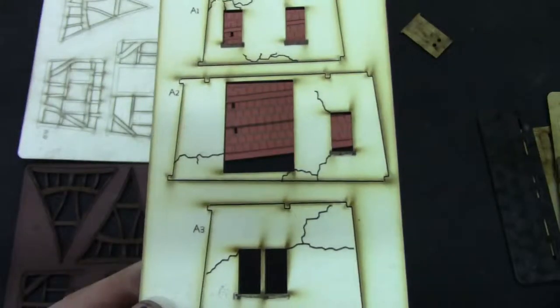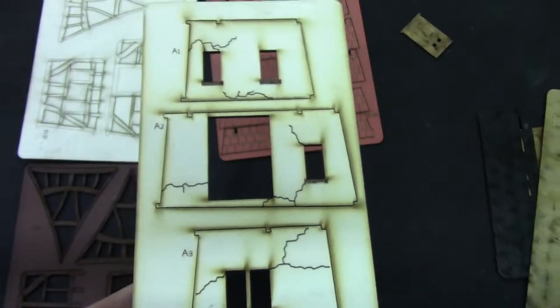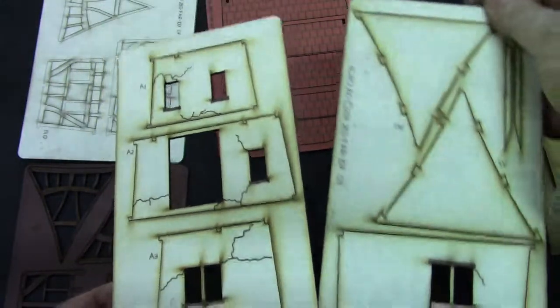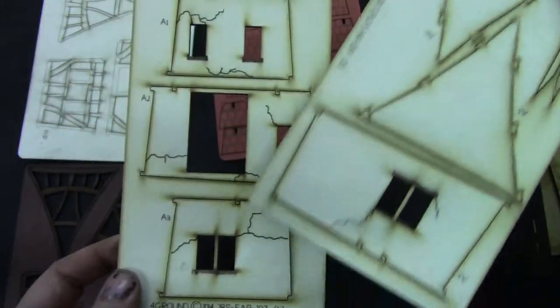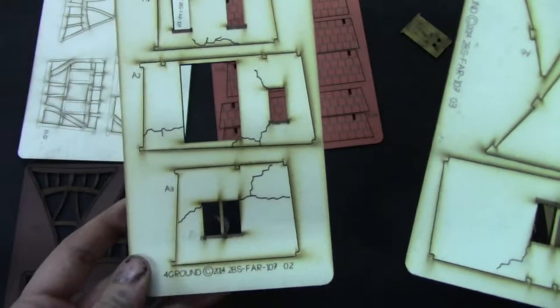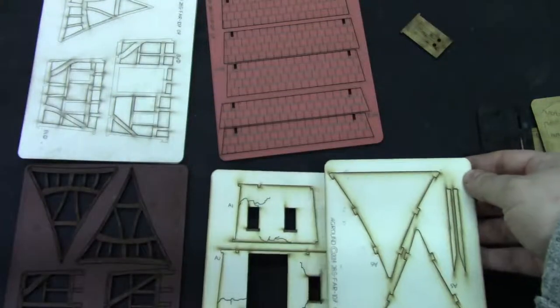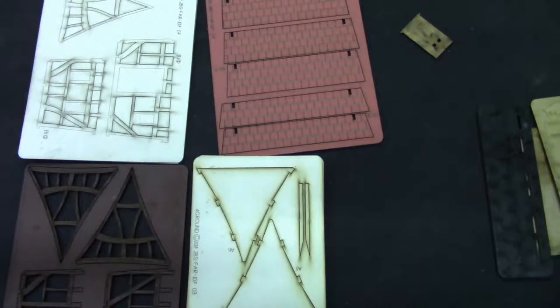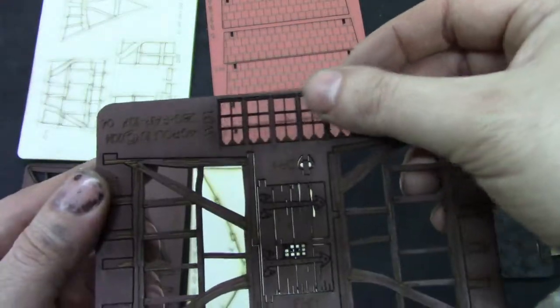These are the walls. There are two of them, two sets for the roof and the walls. Here's the door, more details, and the windows.